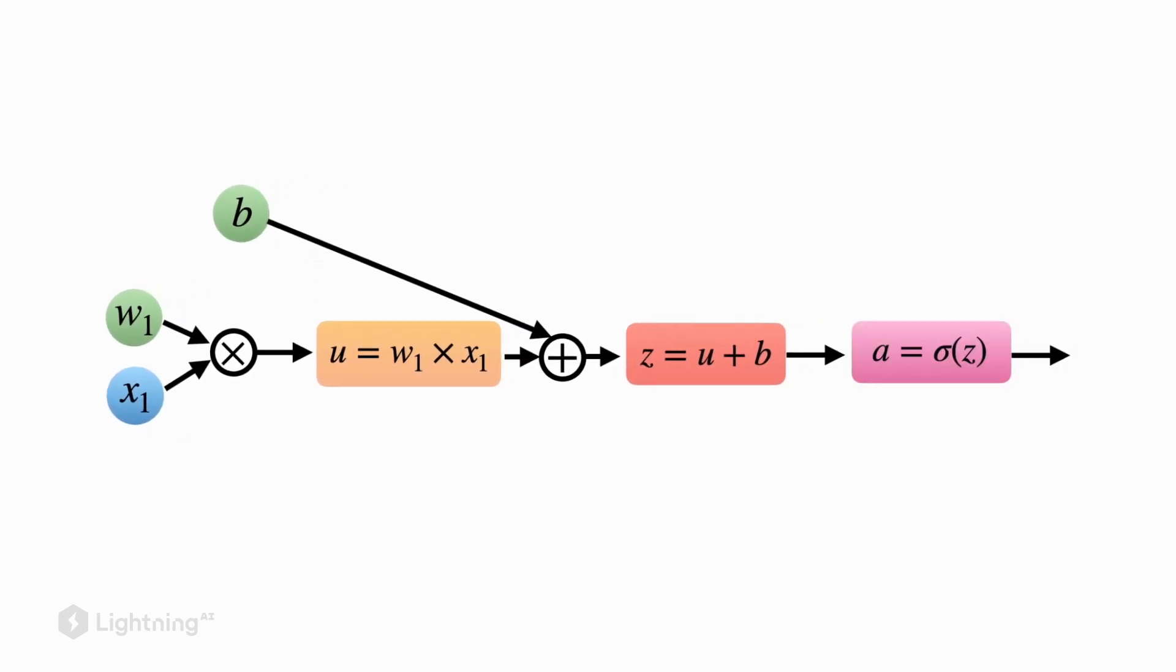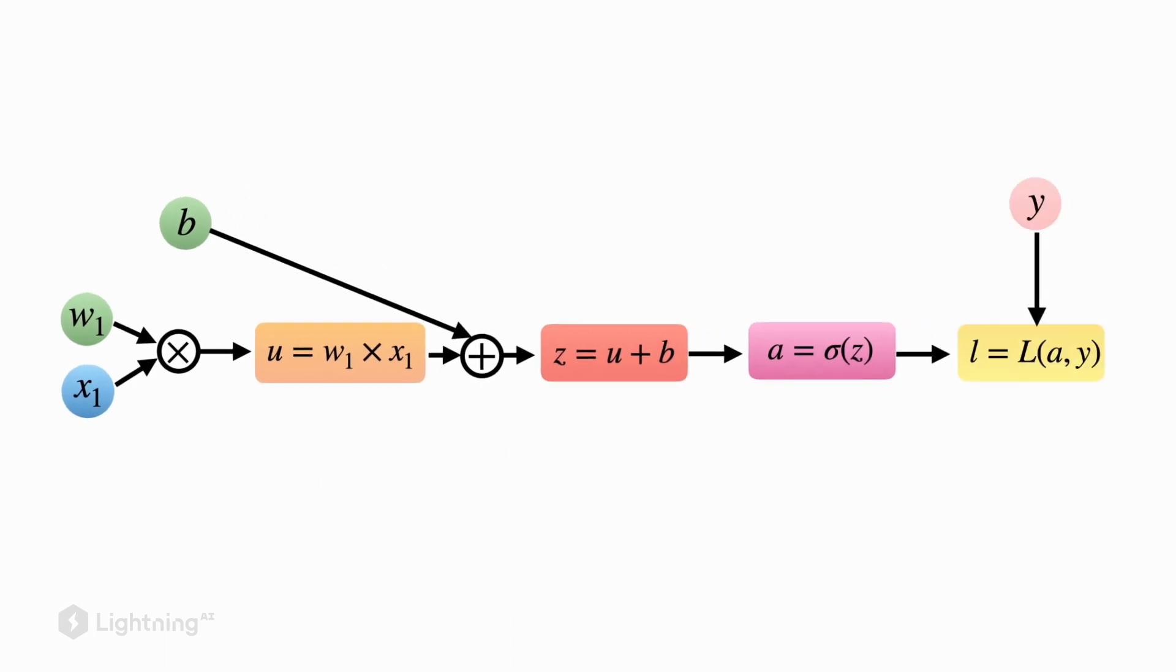Then we apply the logistic regression activation function to our sum. Finally, we compute the loss function. Note here that the loss is computed between the activation output, the class membership probability, and the true class label.